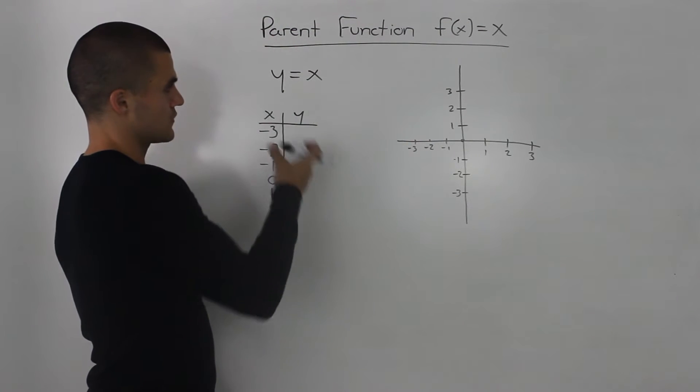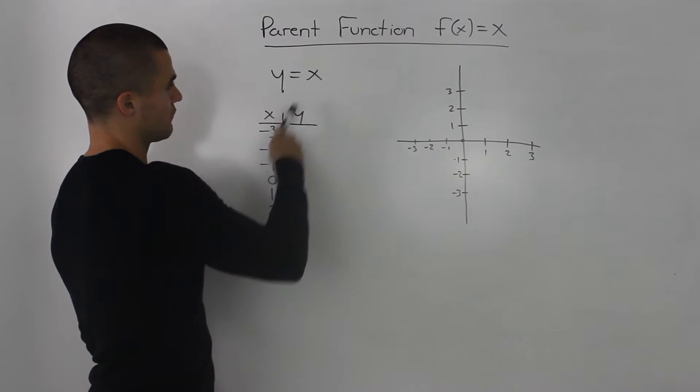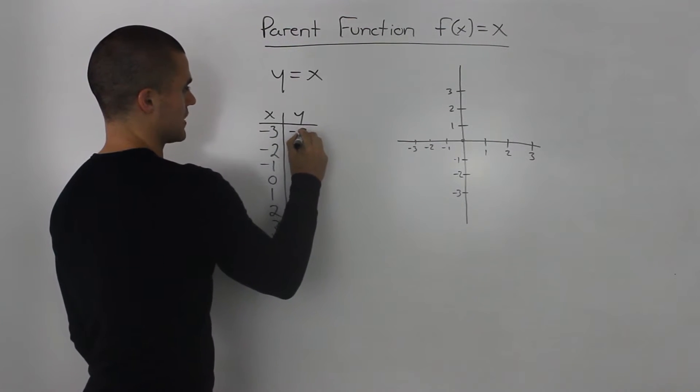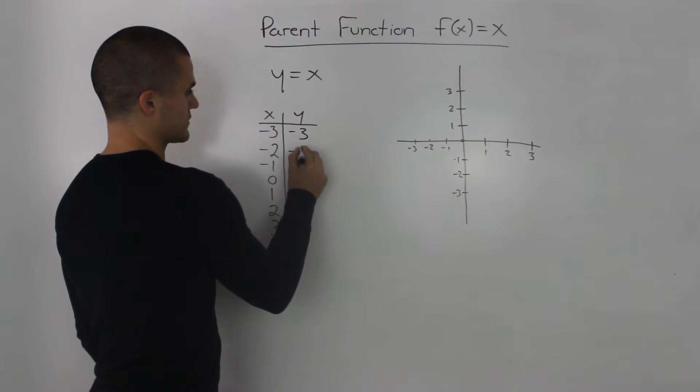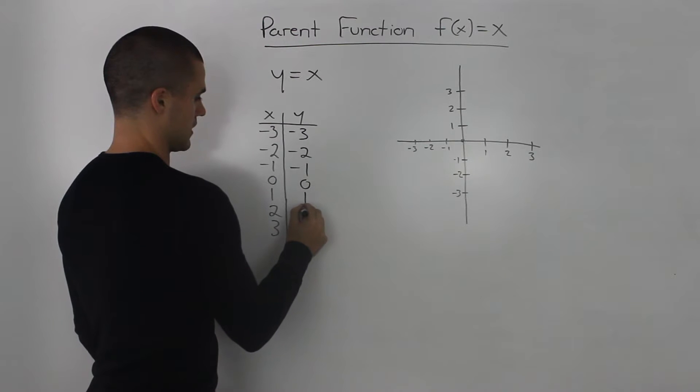So let's make a table of values for this function and then plot the points. So at an x value of negative 3, our y value would also be negative 3. At an x value of negative 2, y would be negative 2, and so on and so on.